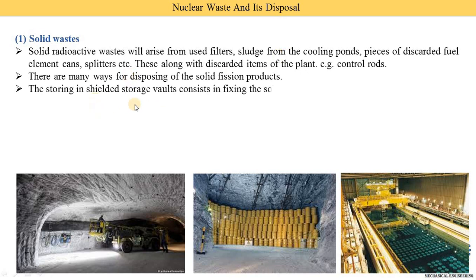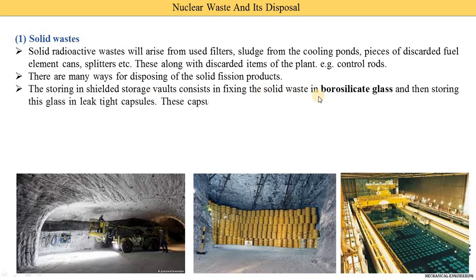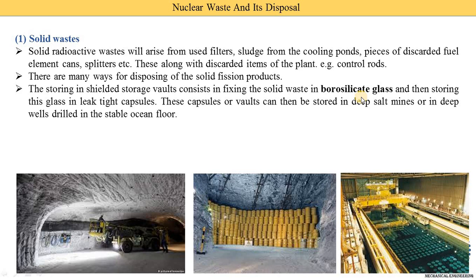There are many ways for disposing of solid fission products. The first method is storing in shielded storage vaults, which consists of fixing the solid waste in borosilicate glass. This borosilicate glass is then put in liquid-tight capsules. These capsules or vaults can be stored in deep salt mines or in deep-well drills in the stable ocean floor — meaning we drill a hole in the ocean floor and place the capsule there.